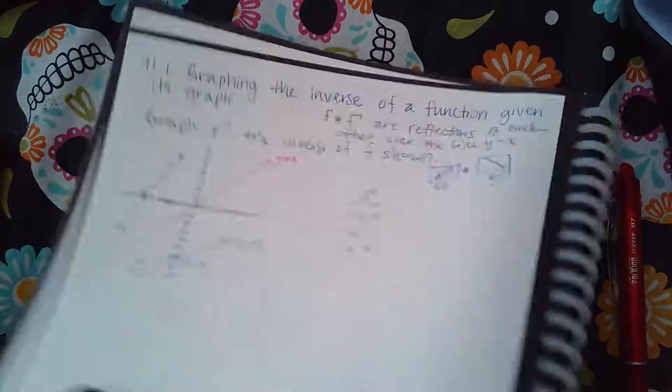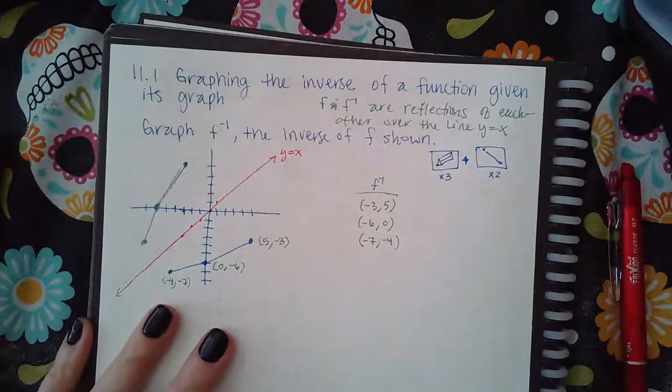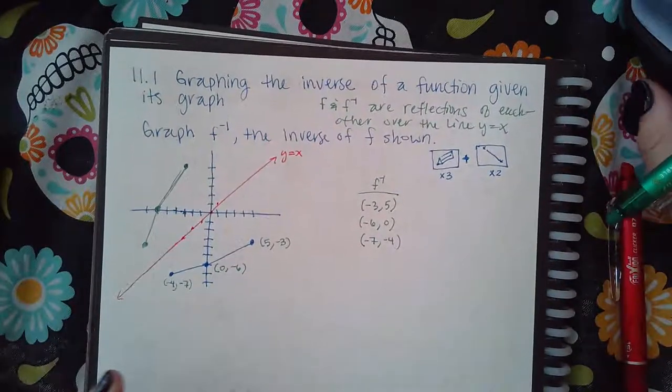List these points and then interchange their x and y values to get the new points on the inverse function. All graphs are going to work like that — it doesn't matter what the graph looks like, you're doing the same process.